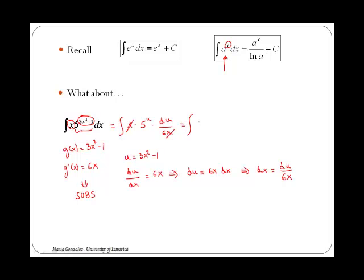Therefore we are left with the integral of 5 to the u by du over 6. Taking 1 over 6 outside, we have simply the integral of 5 to the u du.